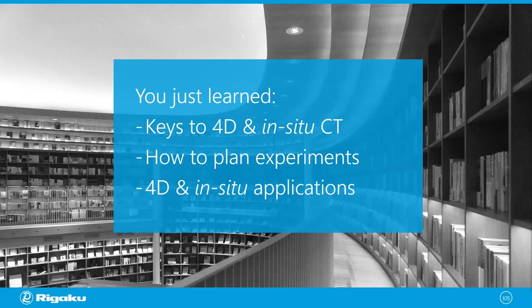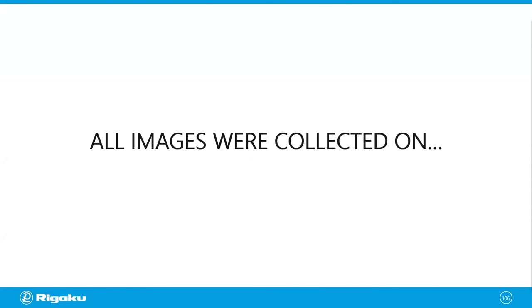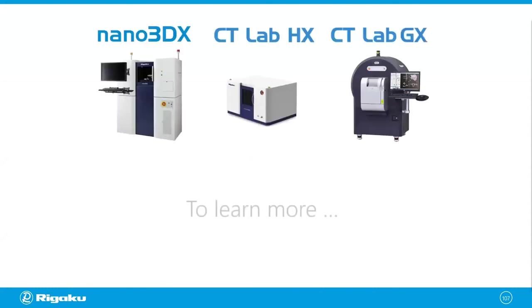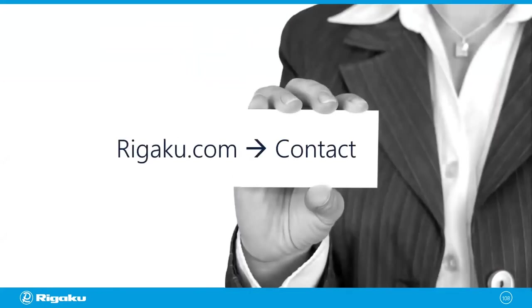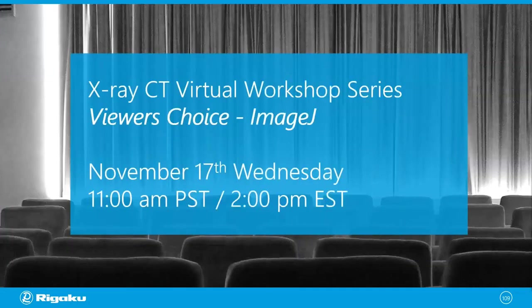So you've learned some keys to 4D and in-situ CT measurements, how to plan experiments, and seen a number of application examples. All images today were collected on Rigaku CT scanners. If you want to learn more, please contact your local sales representative or visit rigaku.com. The next event is the X-ray CT Virtual Workshop Series — a viewer's choice session. You chose ImageJ, so we'll be doing an interactive ImageJ workshop on November 17th, Wednesday, at 11 a.m. Pacific and 2 p.m. Eastern.